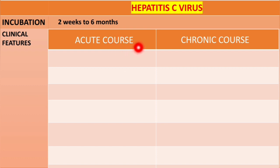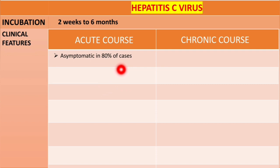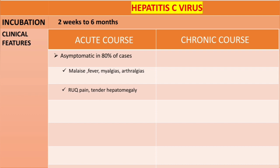Starting with acute infection first: about 80% of cases are asymptomatic, which is why most cases result in chronic infection. If symptoms are present, they are usually non-specific — you can find them in other acute viral hepatitis infections. Symptoms include malaise, fever, myalgia, arthralgia, right upper quadrant pain, tender hepatomegaly, nausea, vomiting, diarrhea, jaundice, and possibly pruritus, which is usually due to high levels of bilirubin.